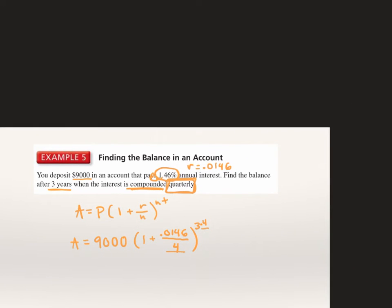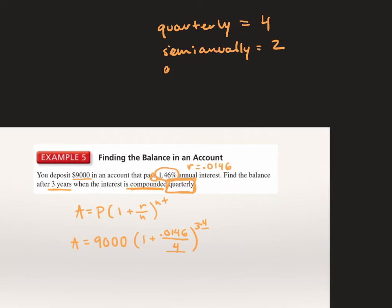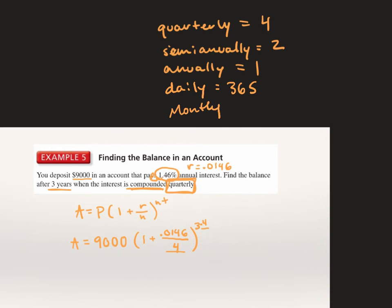Some words you'll see in compound interest problems: quarterly means 4 times per year; semi-annually means twice per year; annually means 1 time per year; daily means 365 times per year because there are 365 days in a year; and monthly means 12 times per year. Those are pretty much the only ones you'll see — just think about how many times that interval occurs in a year.